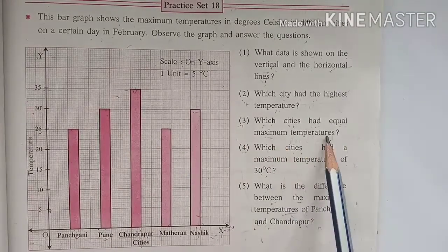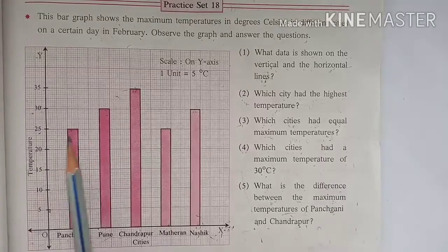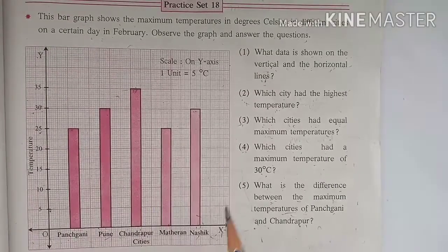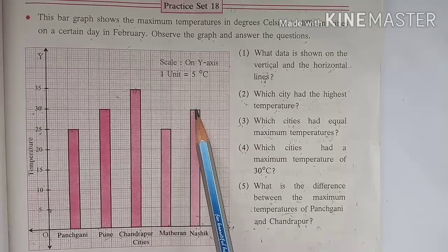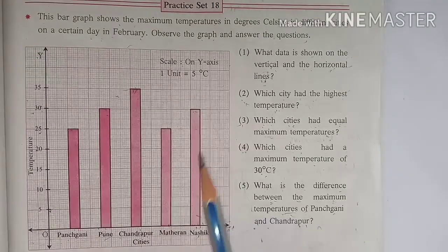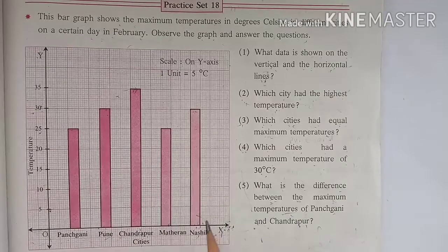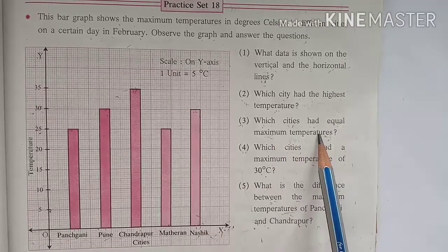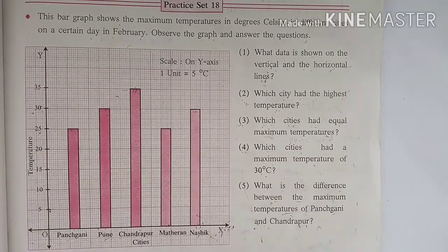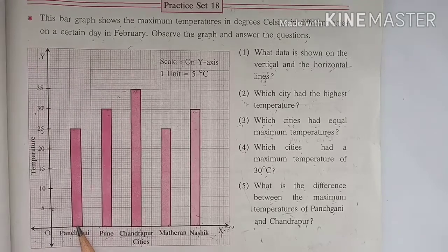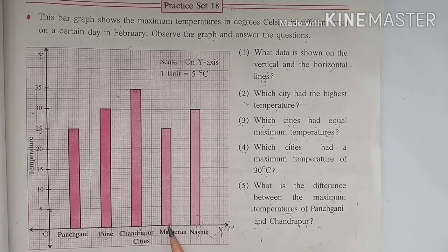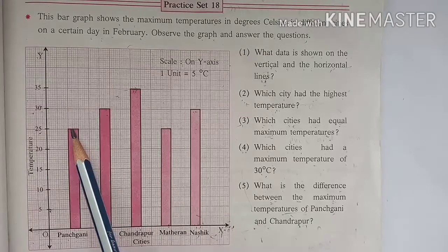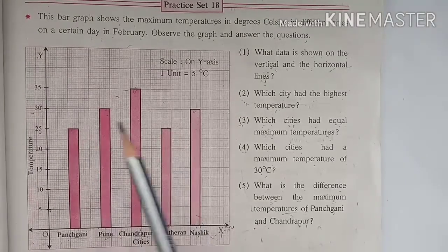Third question: which cities had equal maximum temperatures? If we observe, Pune has 30 degrees Celsius and Nashik has also 30 degrees Celsius temperature. So Pune and Nashik, these two cities had equal maximum temperatures. And also Panchagani and Matheran, these two cities have also the same temperature, that is 25 degrees Celsius.